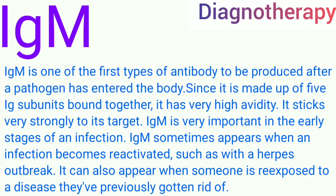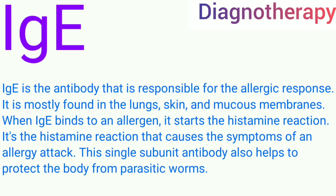IgM can also appear when someone is re-exposed to a disease they have had previously. IgE is the antibody responsible for the allergic response. It is mostly found in the lungs, skin, and mucous membranes. When IgE binds to an allergen, it starts the histamine reaction that causes the symptoms of an allergy attack. This single subunit antibody also helps to protect the body from parasitic worms.